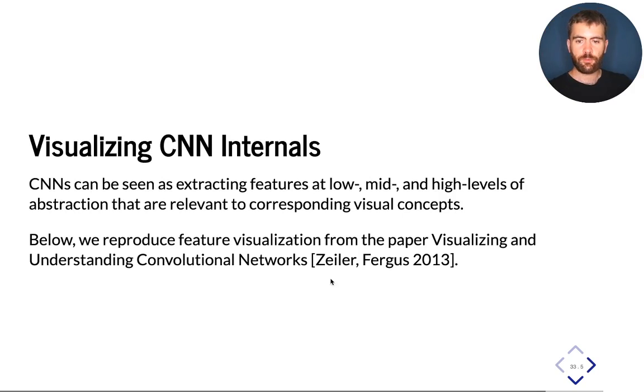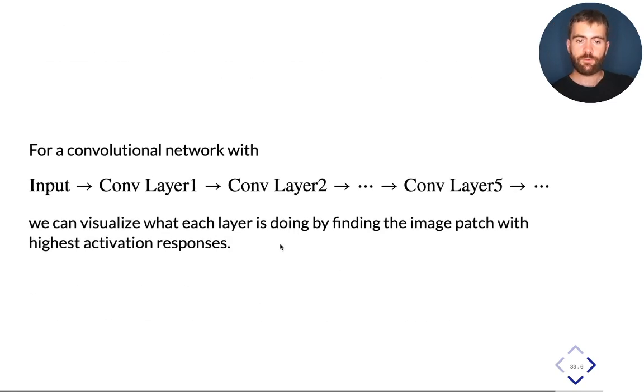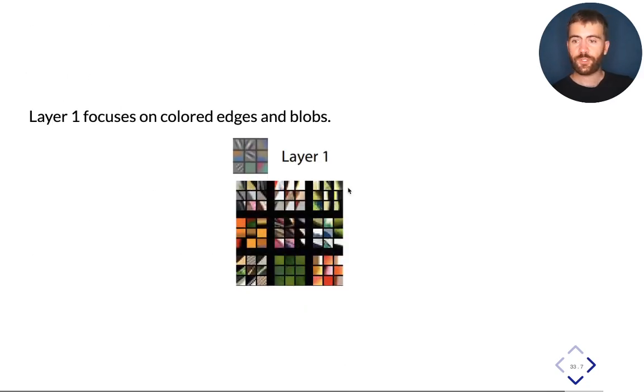To give you a better understanding of what I mean by that, I'm going to show you an example from a paper by Zeiler and Fergus from 2013, which was one of the earlier papers to visualize the internals of a successful and powerful convolutional neural network model. Here we have a model which is a sequence of convolutional layers. We can visualize what each layer does by finding patches of the image, so subsets of images that have really high activation responses. We can also visualize the filters themselves using certain techniques. If we look at the first layer of a convolutional neural network and visualize what each filter does, these filters tend to detect certain simple structures in the data, like edges and blobs.